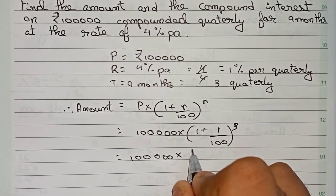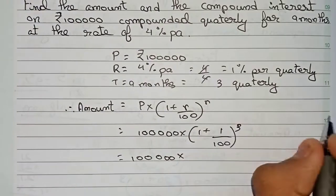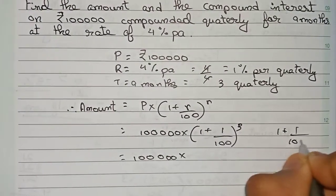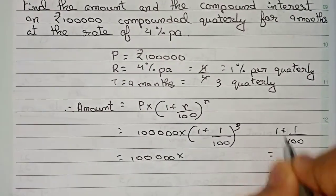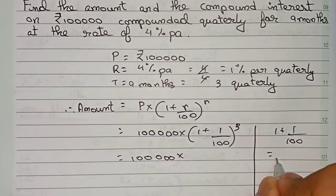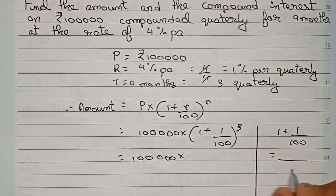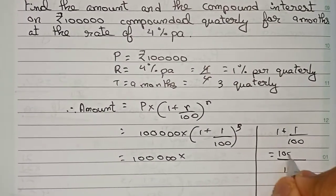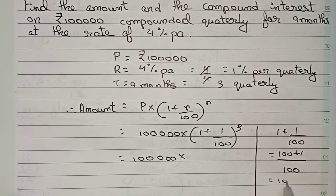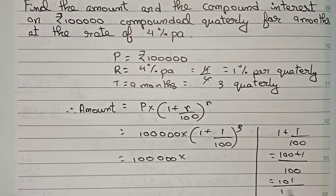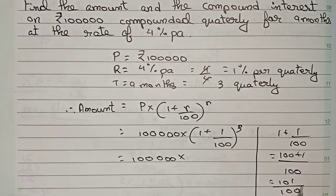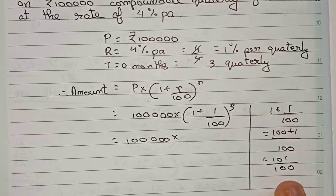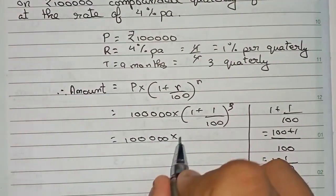First, we solve inside the bracket. Taking 100 as the LCM: 1 + 1/100 = 101/100. So the expression becomes 1,00,000 × (101/100)^3, which means (101/100) multiplied three times.